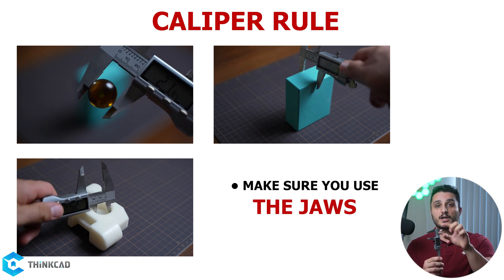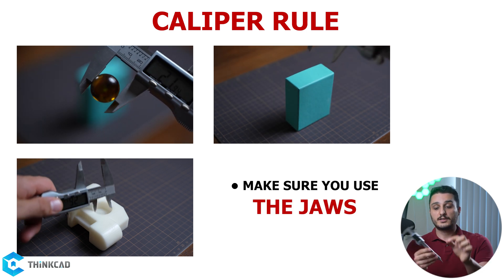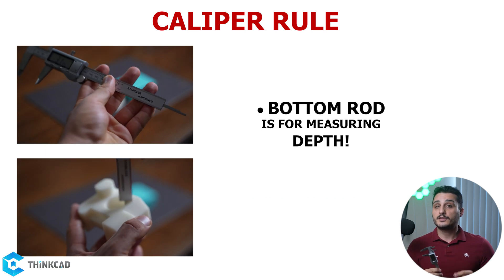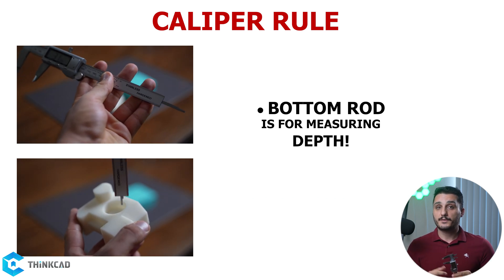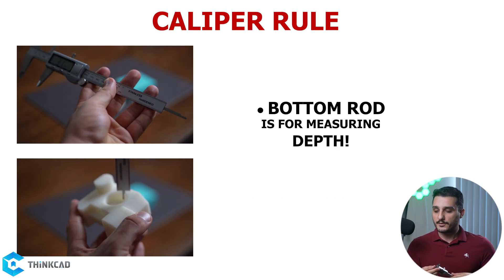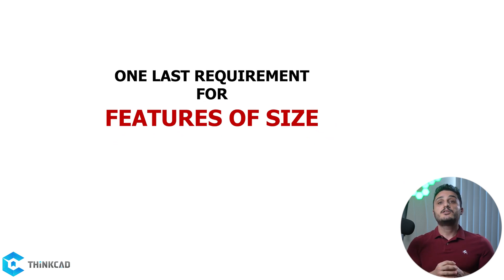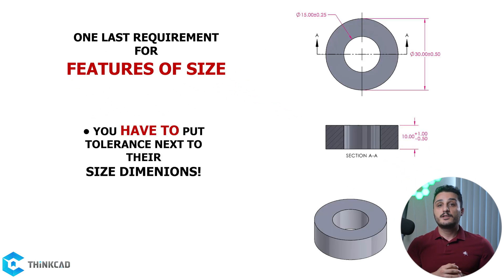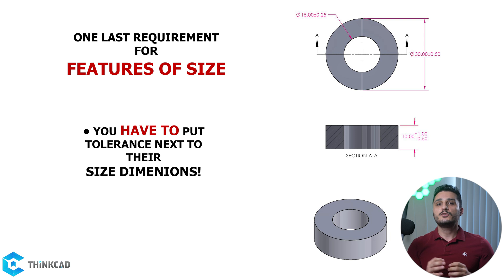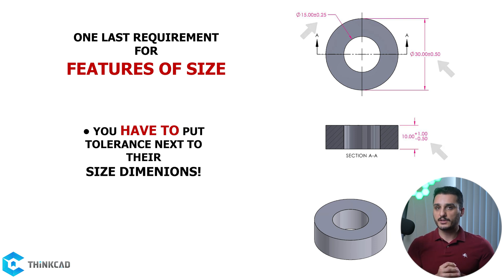Make sure you use the jaws and not the bottom rod — the bottom rod is used to measure depth. There is one last requirement which was added in the 2009 standard: Features of Size need to have size dimensions which are directly toleranced. This means you need to have tolerance values right next to your size dimension, otherwise it won't be considered a feature of size.